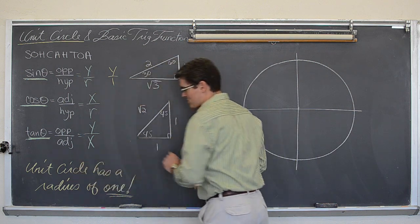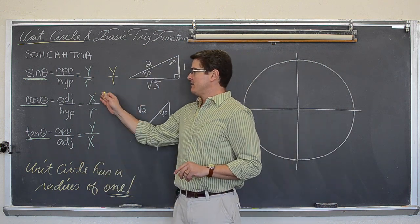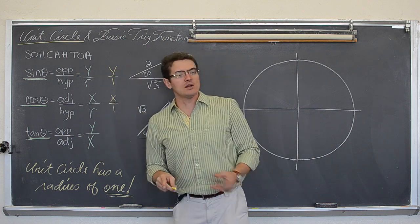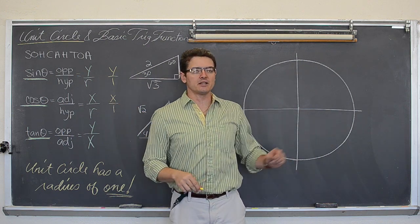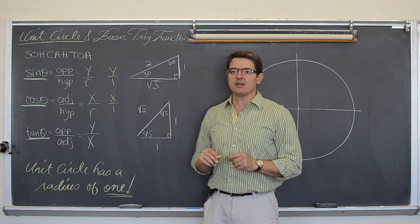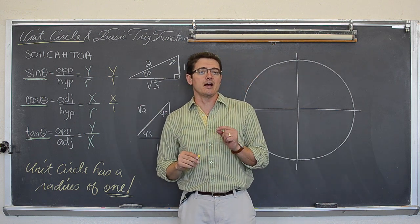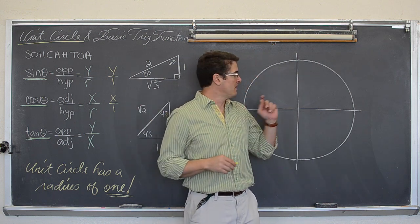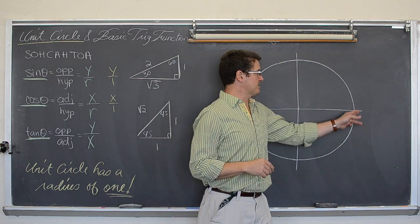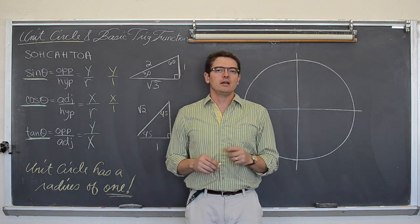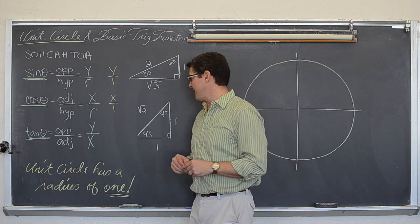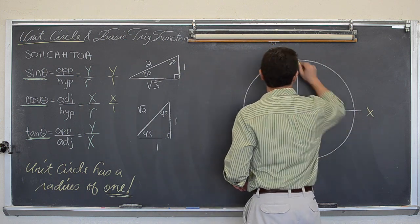For a unit circle whose radius is one, the cosine is going to be x over one. So as you look at all these points around the unit circle, your cosine values are simply the x coordinate — on a circle whose radius is one and whose center is on the origin of the xy coordinate plane.